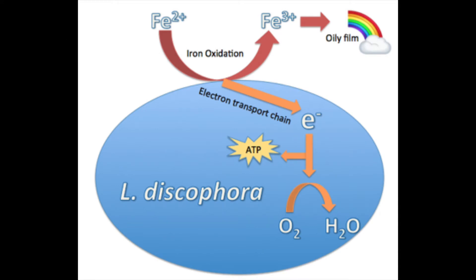L. dyscophora oxidizes inorganic molecules, such as Fe2+, ferrous iron, to obtain reducing equivalents like Fe3+, ferric iron. Ferric iron can then be used in various biosynthesis and energy conservation pathways via aerobic respiration, as shown here in the diagram. The electrons gathered from these redox reactions can aid in the production of ATP, a primal energy source for the bacterial cell.